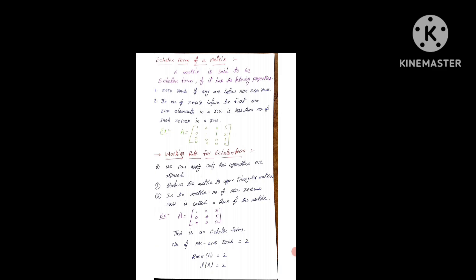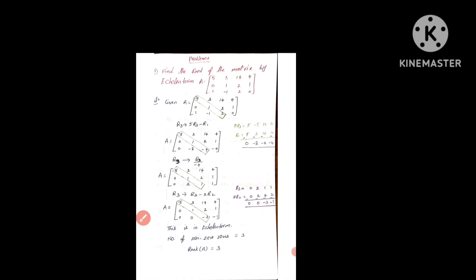Let's go to one problem. Find the rank of the matrix by Echelon Form. Take this example: A is equal to [5, 3, 14, 4 / 0, 1, 2, 1 / 1, 1, 2, 0]. We will go to the solution. Given A is equal to [5, 3, 14, 4 / 0, 1, 2, 1 / 1, 1, 1, 2, 0].